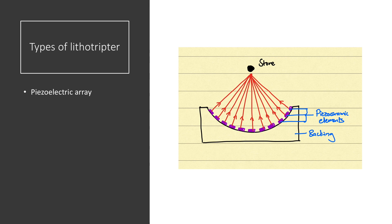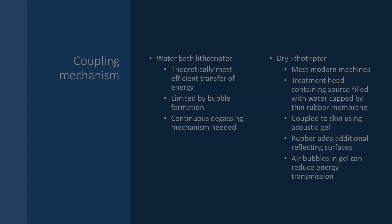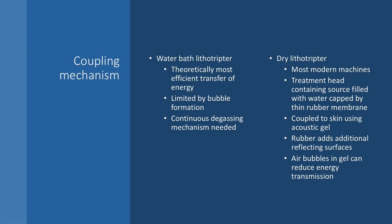So those are the three types of shockwave generators seen in lithotripsy machines: EHL, electromagnetic, and piezoelectric. Once the shockwave is generated, we have to get that energy into the patient and onto the kidney stone, which relies on some form of reliable coupling mechanism.